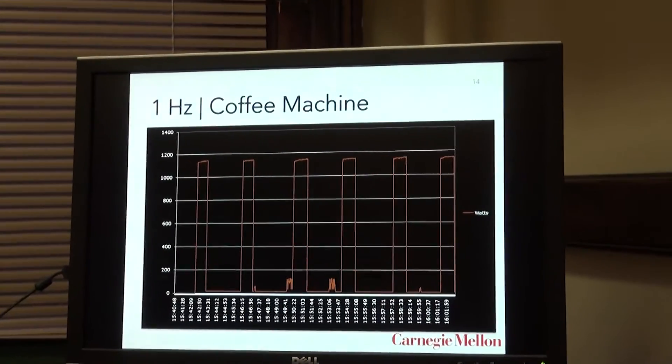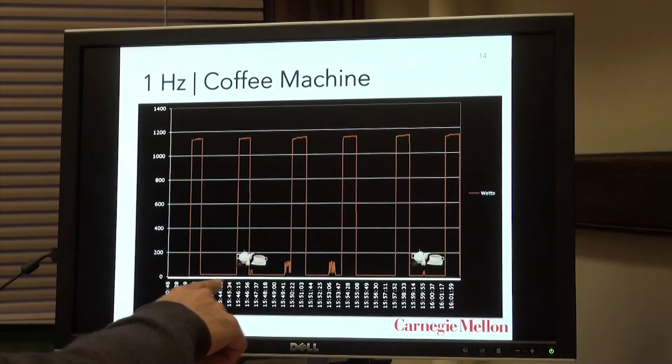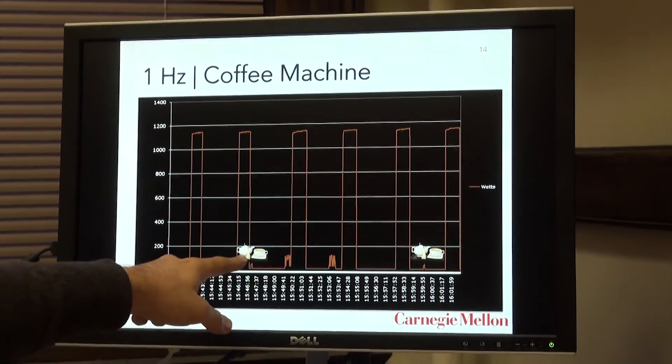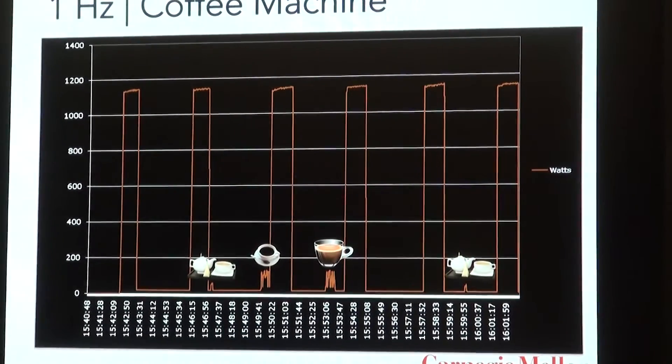But we're also able to detect when, for example, tea is being dispensed, which would be corresponding to these little blips right here, and also when coffee or mocha is being dispensed.